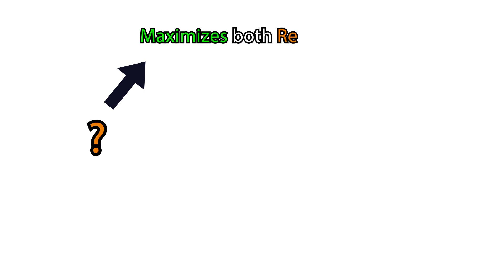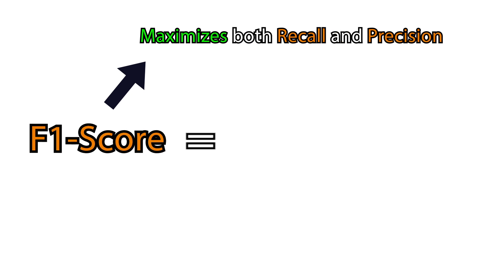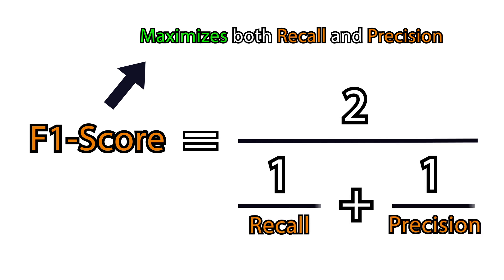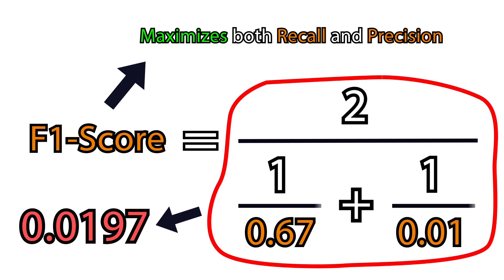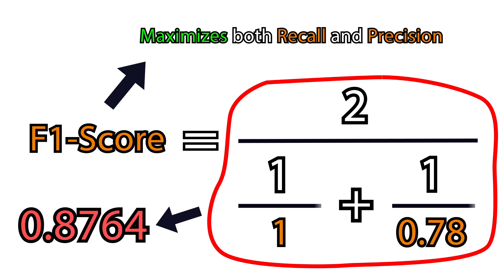There is another measure that tries to maximize both recall and precision, called F1 score. It takes the harmonic mean of precision and recall, meaning that you can get a high F1 score in the case you have high precision and recall.